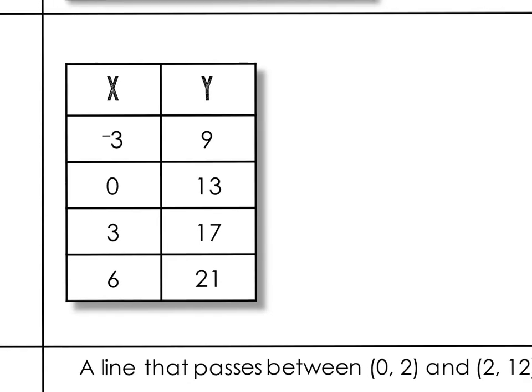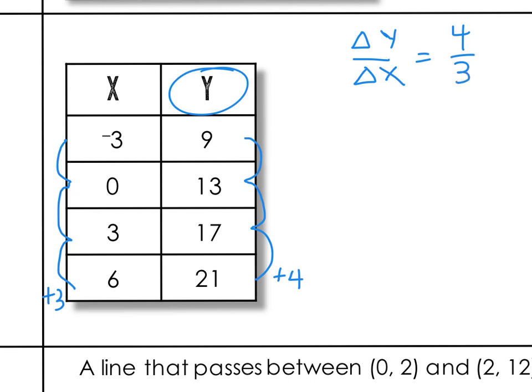My table here, recall, we want the change in Y over the change in X. So I'm going to look at my Y first, since I've already said it's a very common mistake to do change in X, because it comes first, but we're going to do change in Y. So from nine to 13, I have to add four, 13 plus four is 17, plus four is 21. So my change in Y is positive four. And my change in X, negative three plus three is zero, plus three is three, plus three is six. So my change in X is positive three. So my slope is four over three. And even though we want our slope to be simplified, we will leave slope as an improper, but still simplified improper fraction.